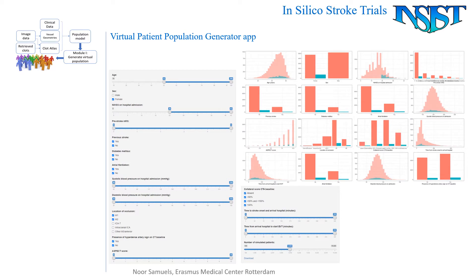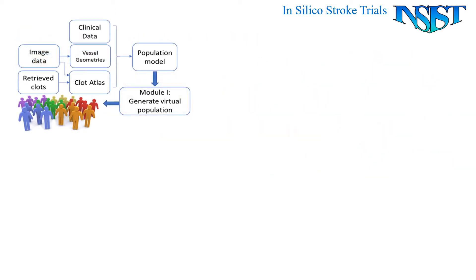We include a wide range of possible inclusion and exclusion criteria, and develop a patient population generator app to generate as many virtual patients as we want, with well-validated distributions of age, sex, blood pressure, occlusion location, and all other characteristics that we need. This virtual population then forms the base for the next step.